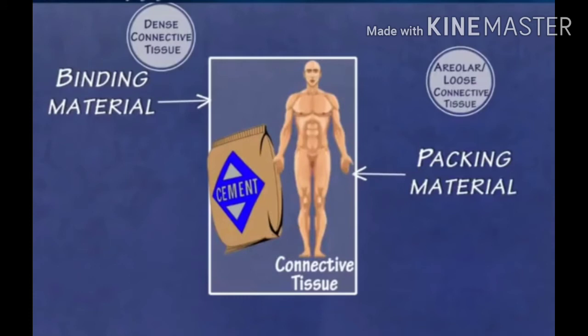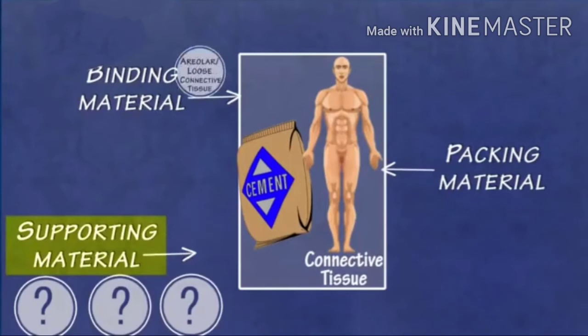There are two types of connective tissue: densely connective and loosely connective — they are mostly tightly packed or loosely packed. One is the binding material and another is the packing material. Now the third type comes — the supporting material.